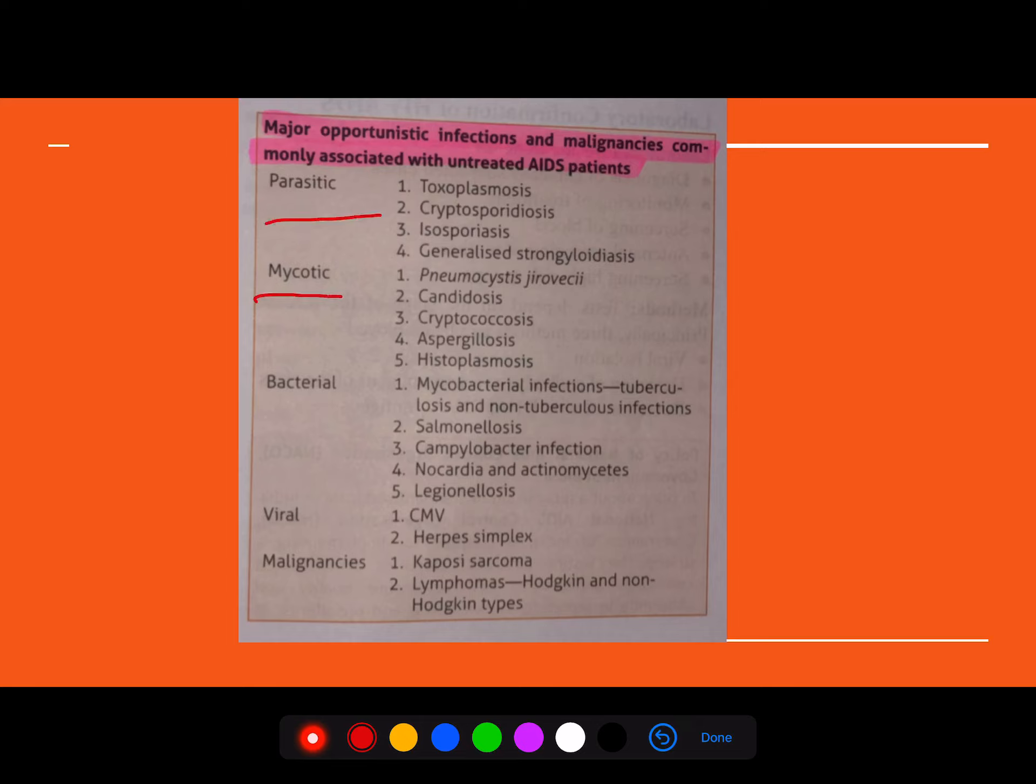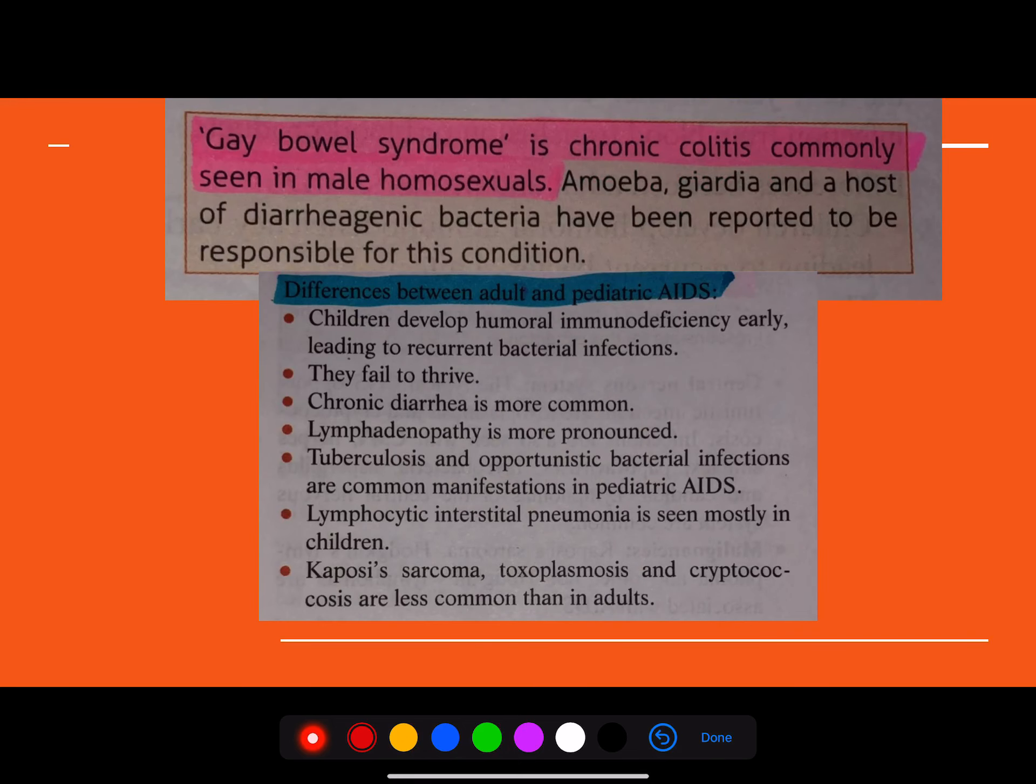And the major opportunistic infections and malignancies that you can see in an untreated HIV patient. So what are the parasitic infections? What are the fungal infections? What are the bacterial, what are the viral and what are the malignancies? The most common malignancies, of course, this question was a diagram-based question that was given about Kaposi's sarcoma in 2020.